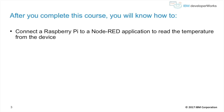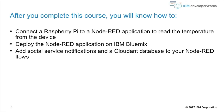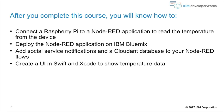After you complete this course, you will know how to connect a Raspberry Pi to a Node-RED application to read the temperature from the device, deploy the Node-RED application on IBM Bluemix, and add social service notifications on the Cloudant database to your Node-RED flows.